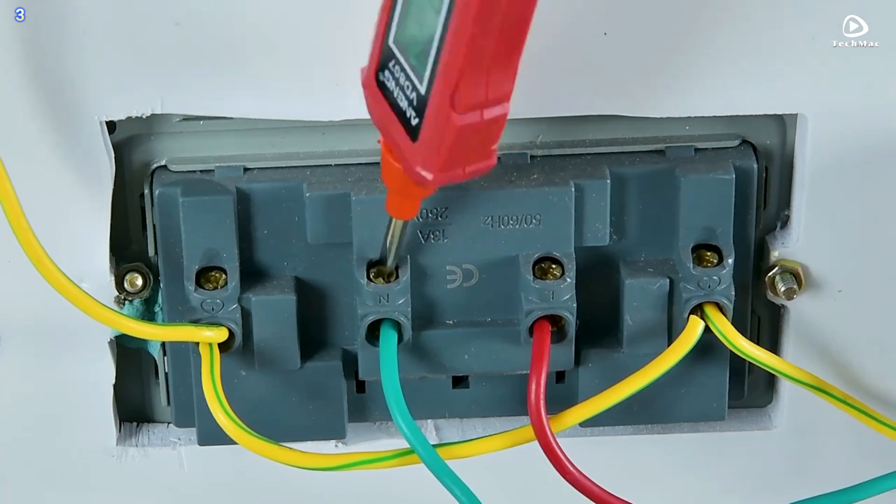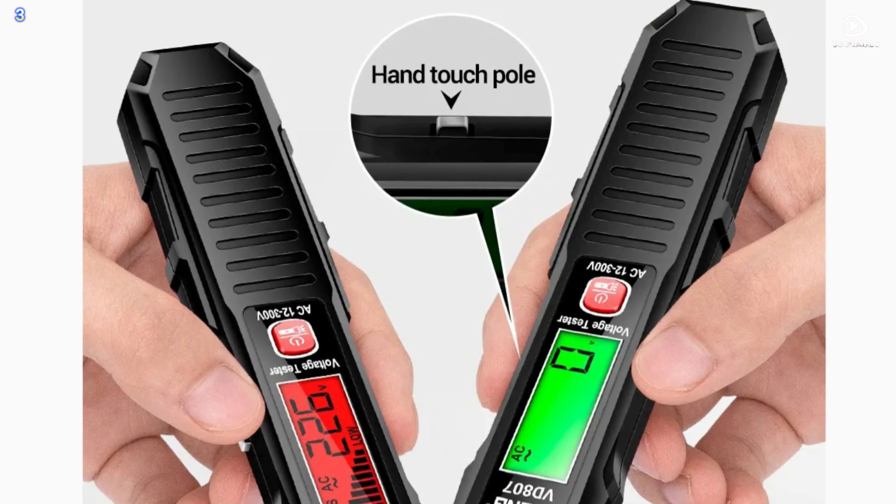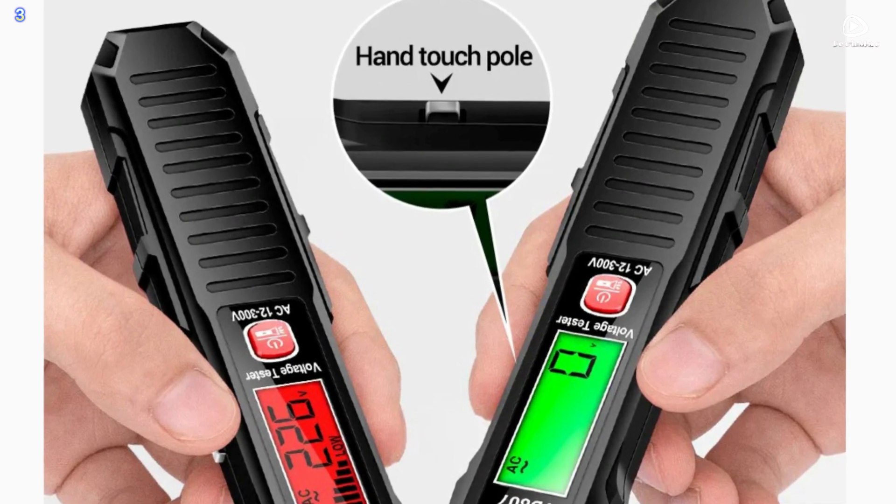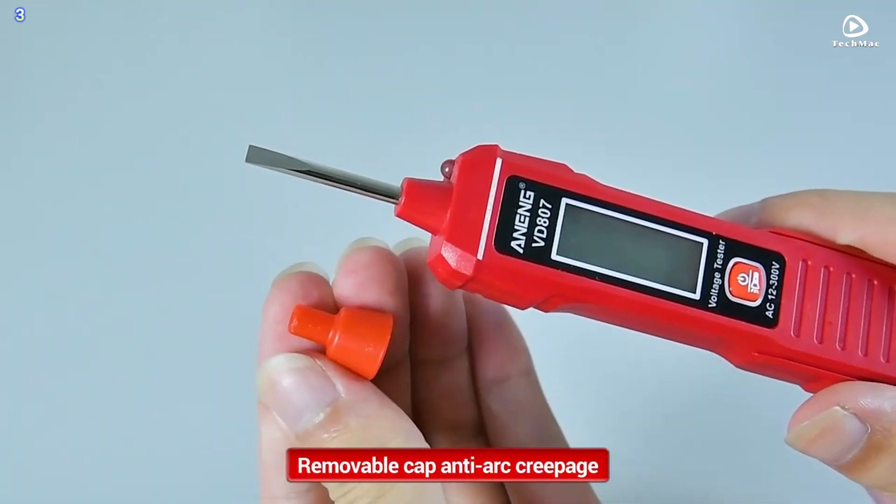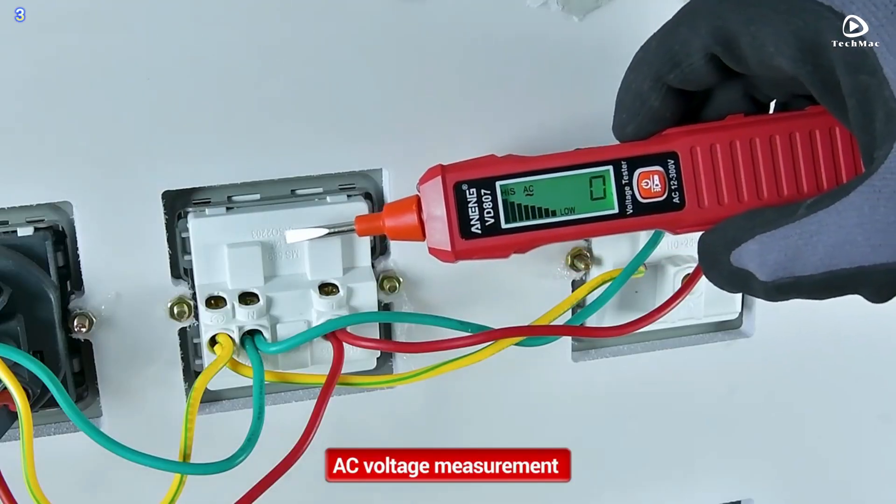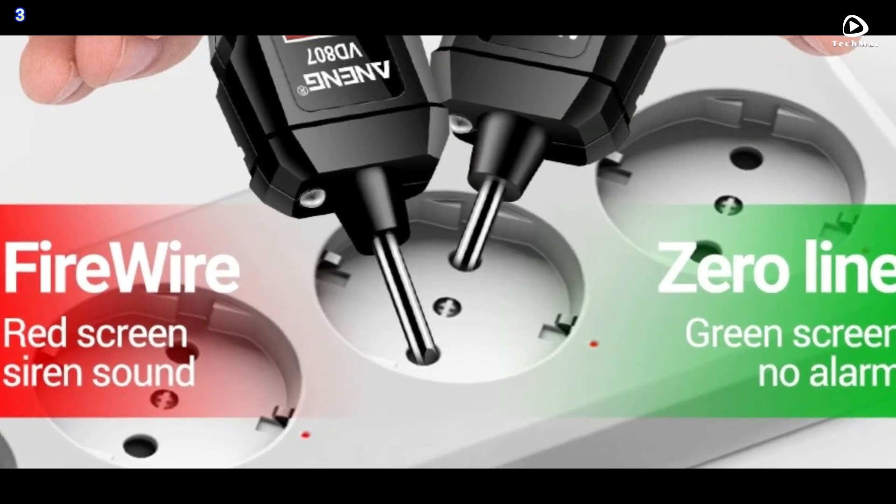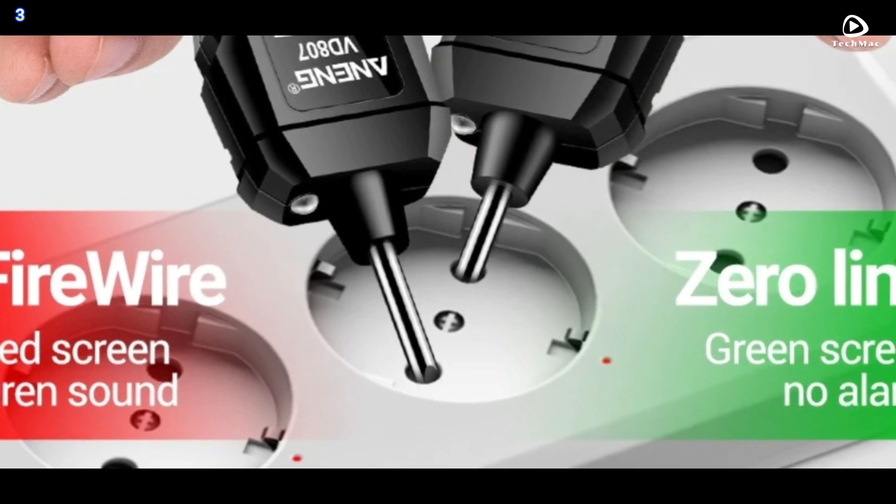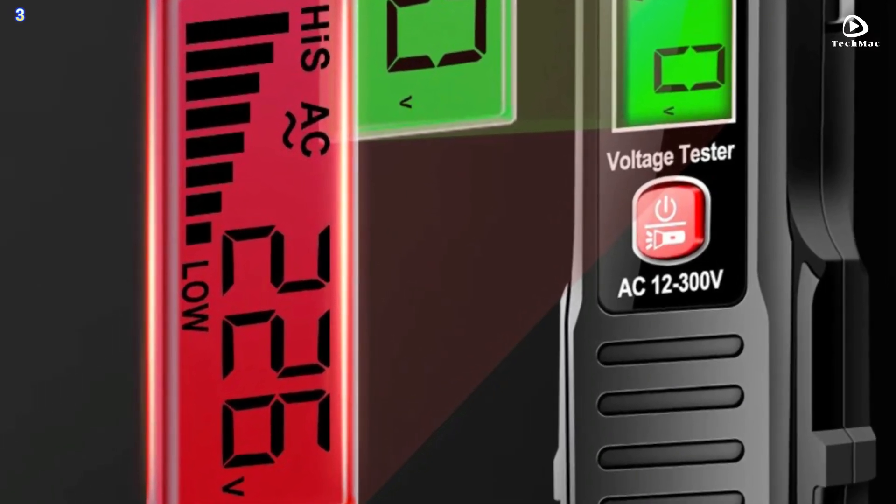Smart contactless NCV induction: non-contact sensing when a nearby AC voltage is detected, the screen index mesh rises from low to high. The Anning VD807 uses standard batteries which are easy to replace. And with its automatic power-off feature, you'll save on battery life when the device isn't in use.